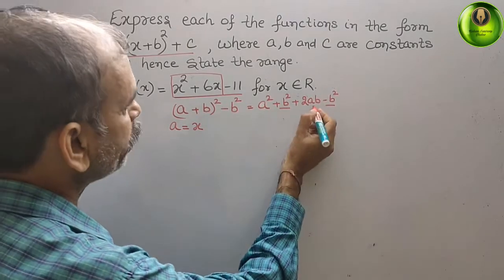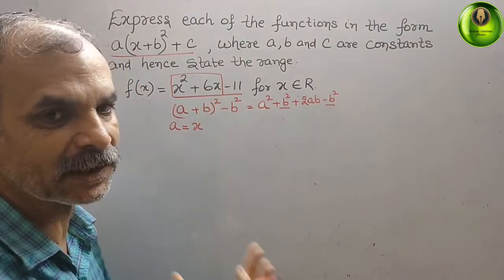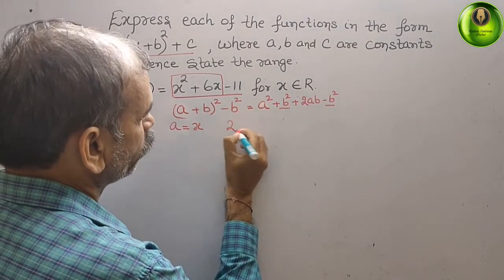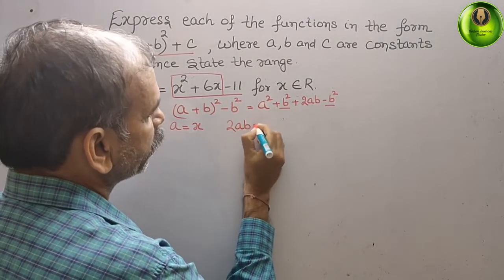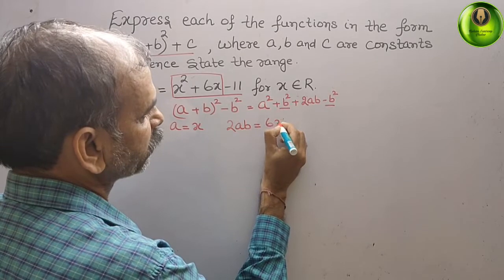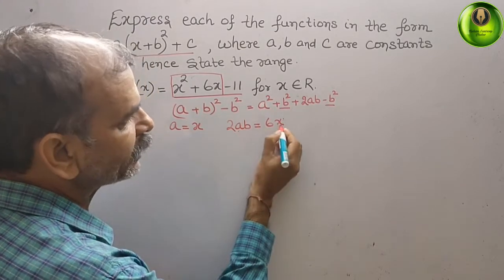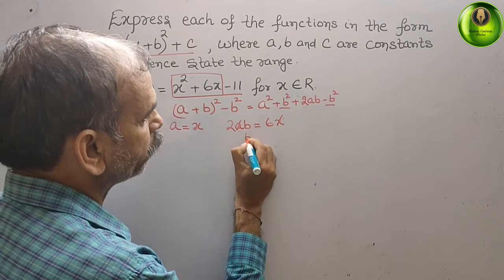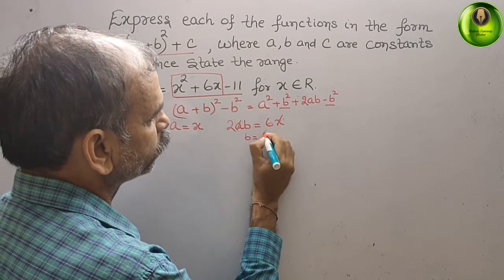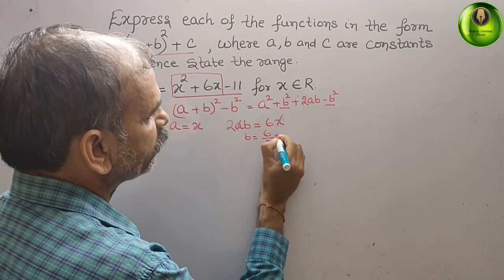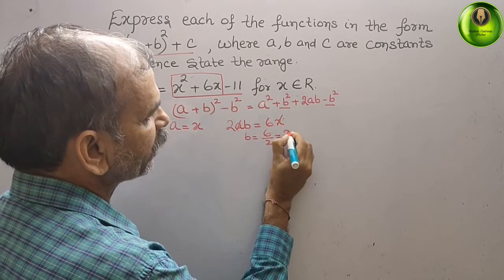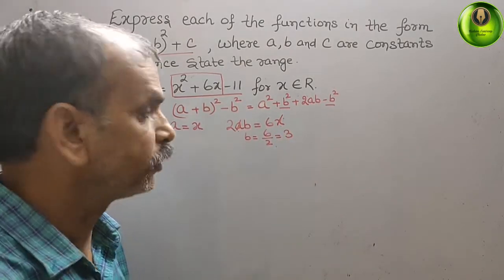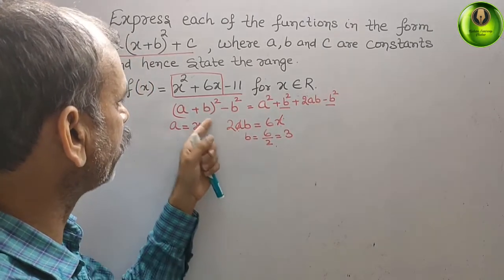Next, 2ab = 6x. Since a = x, we can cancel x from both sides, giving us 2b = 6, so b = 6/2 = 3. Now we substitute a and b values.